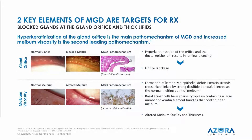There are two key elements of meibomian gland dysfunction that we can target with a prescription drug. Firstly, there is the blockage of the gland orifice, where you get hyperkeratinisation at the gland orifice. You also get keratinised material in the meibum itself from the proteins of the acini cells, as well as keratinised material within the meibum, which alters the quality of the meibum.